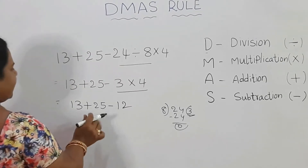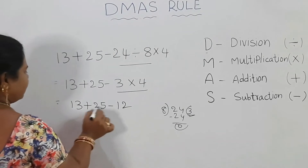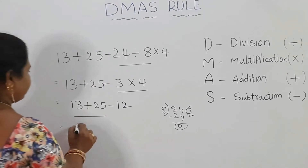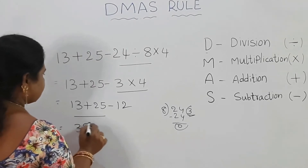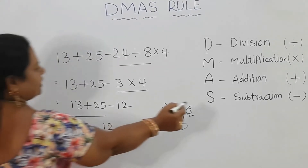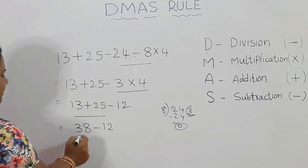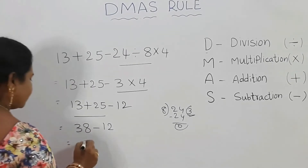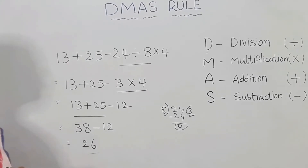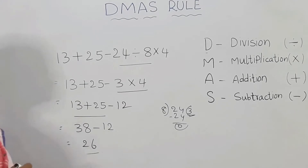Next, addition: 13 plus 25 equals 38, minus 12. Last step is subtraction: 38 minus 12 equals 26. So the answer is 26.